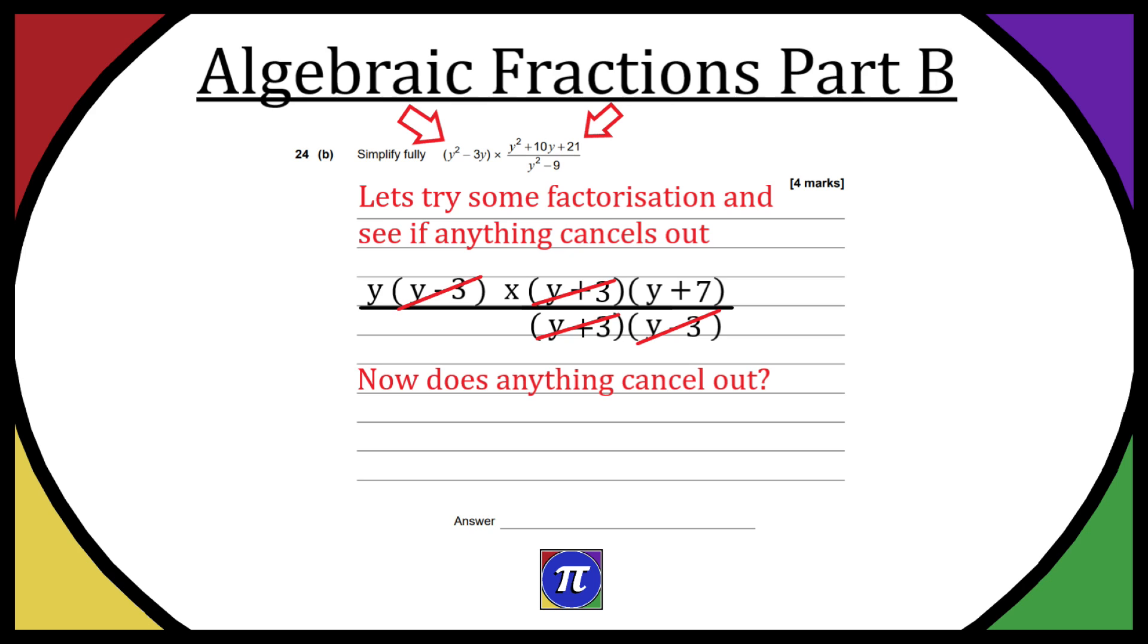Once these cancel out, we're not left with very much, which is good because we want it simplified fully. We're left with y(y + 7). You can leave that as your final answer or multiply it out. Either answer will get you the marks.